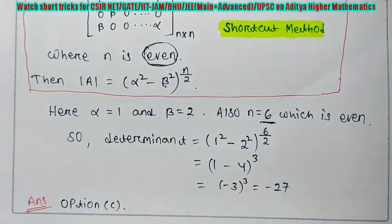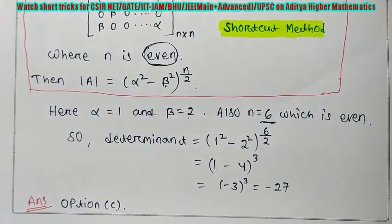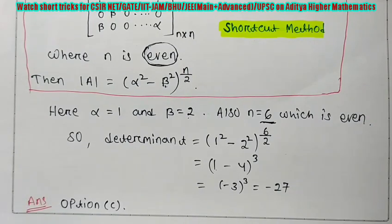And also you can verify by finding it using the general method, whether you are getting 27 or minus 27 or not.